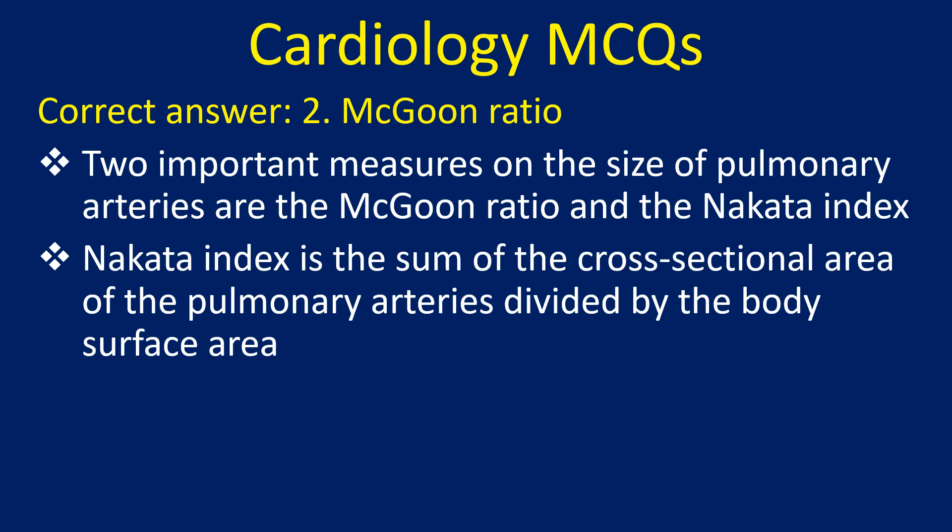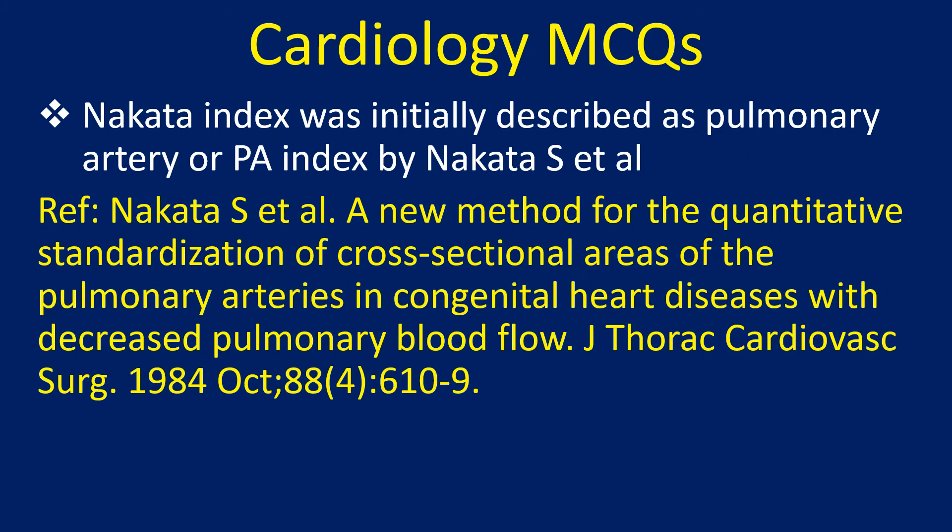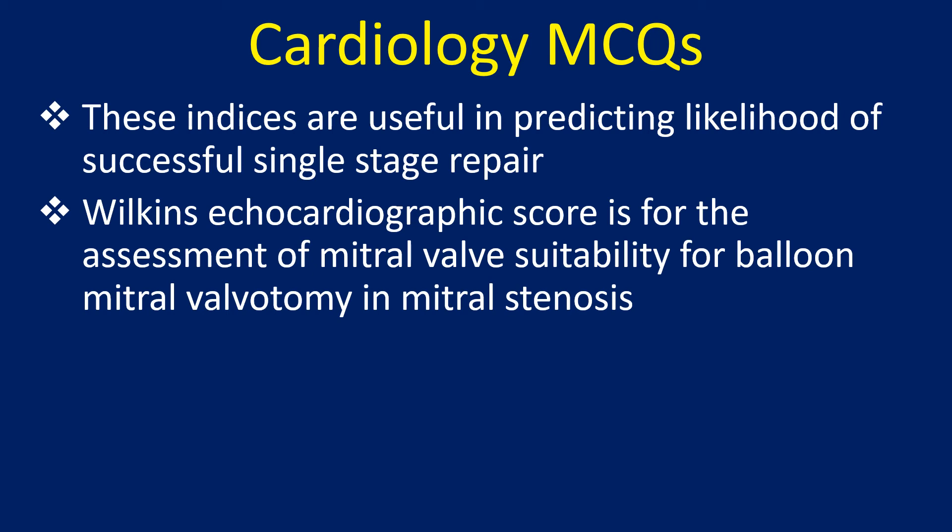Two important measures of the size of pulmonary arteries are the Magoon ratio and the Nakata index. The Nakata index is the sum of the cross-sectional area of the pulmonary arteries divided by the body surface area. It was initially described as the pulmonary artery (PA) index by Nakata and colleagues. These indices are useful in predicting the likelihood of successful single-stage repair. The Wilkins echocardiographic score is for assessment of mitral valve suitability for balloon mitral valvotomy in mitral stenosis.